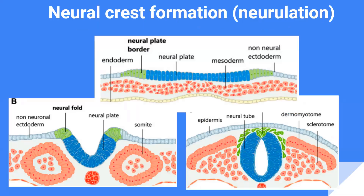What follows next is a process known as neurulation, which is when the initial phase of neural crest cell formation takes place. The future neural crest cells are located in an area known as the neural plate border, which is located at the edges of the neural plate.